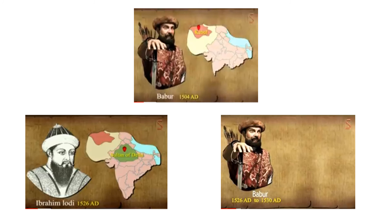Rana Sangha dreamt of restoring a great empire. As soon as he realized that Babur intended to stay in India and establish a new empire, Sangha made efforts to gather a coalition force against him.